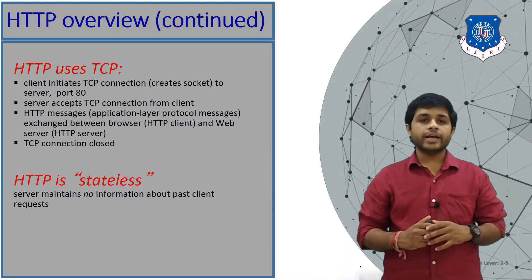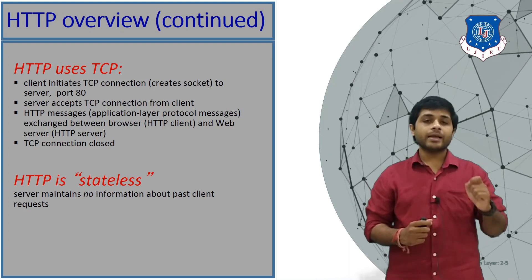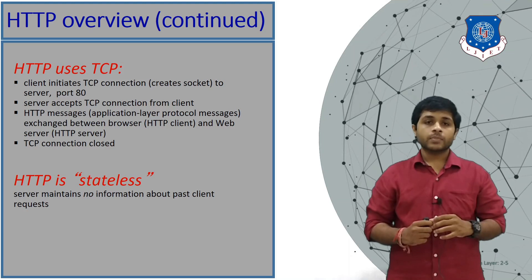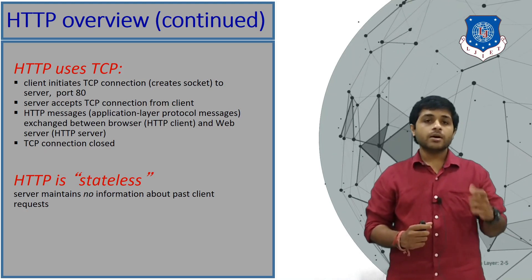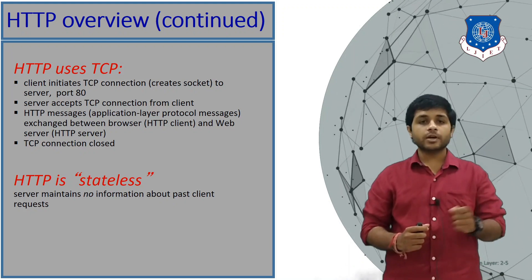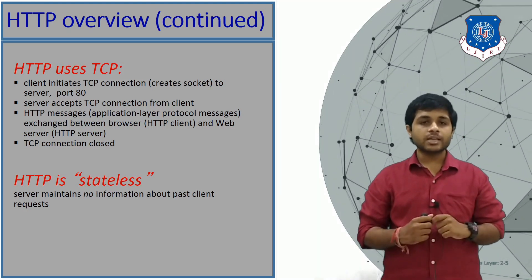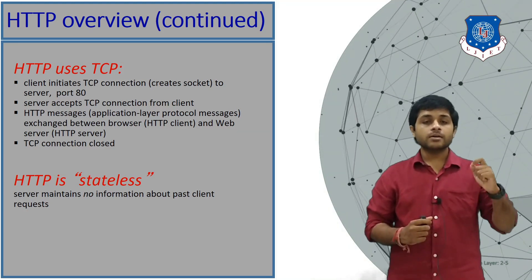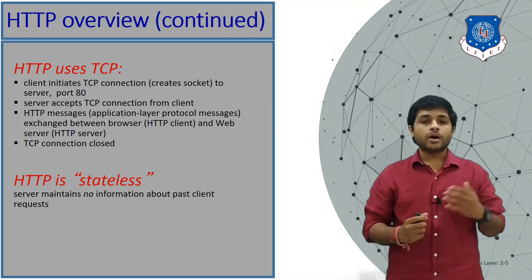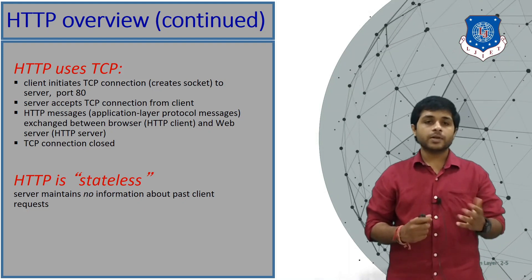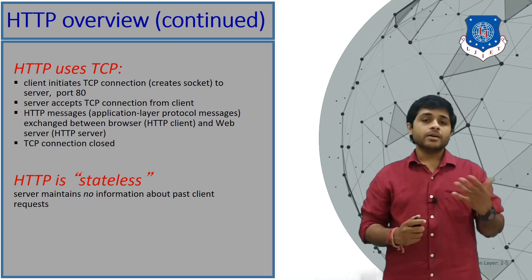In the HTTP protocol, the client uses a TCP connection and the port number is fixed at 80. The server accepts the TCP connection from the client, HTTP messages are exchanged between the browser and server, and then the TCP connection is closed. There are three main steps: connection is established on port 80, HTTP messages are transferred, and then the connection is terminated. One key thing about HTTP is that it is a stateless protocol — it does not maintain any history about any clients.